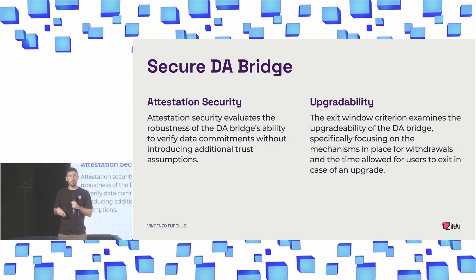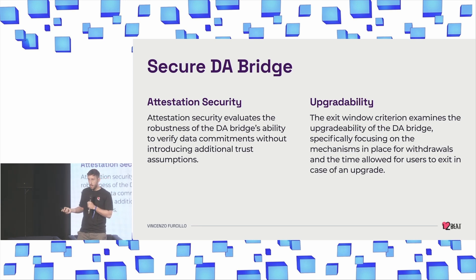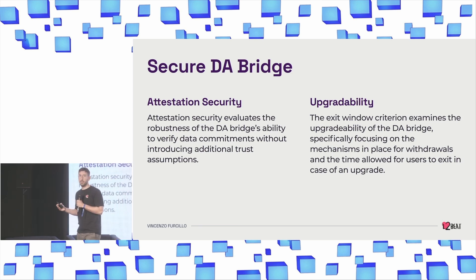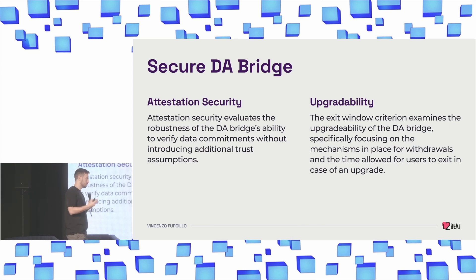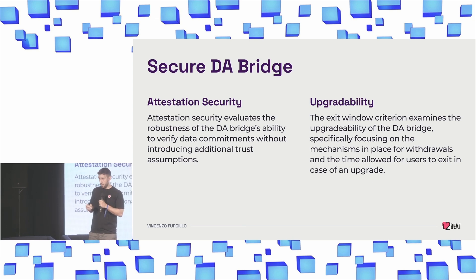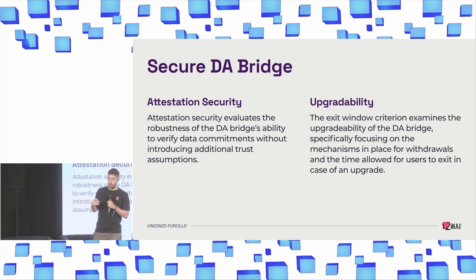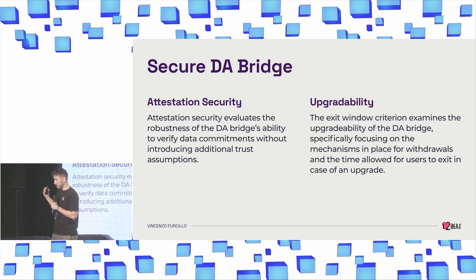Now looking at securing the DA bridge, issues fall into two groups: attestation security — how robust is the bridge's verification of data commitments and does it reduce additional trust assumptions — and upgradability, which is common to smart contracts and L2s, requiring criteria for an exit window so that if there is any unwanted upgrade, users are able to exit the system.